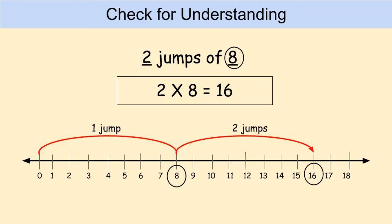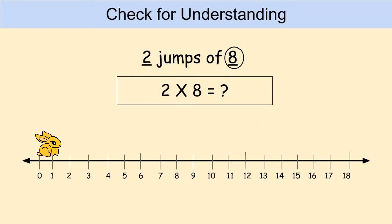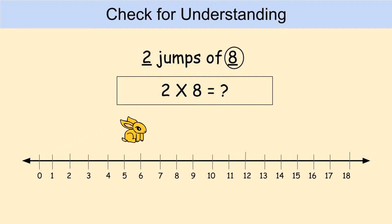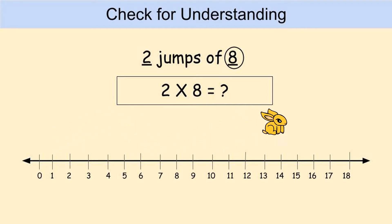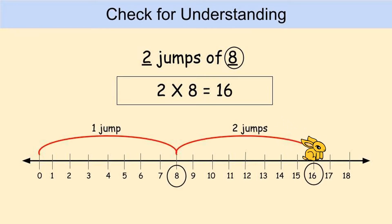Let's play back the video to see Cupcake's jump one more time. Cupcake started on zero and jumped to eight — eight is the number that's circled. Cupcake jumps one more time to sixteen because we have two jumps. Two jumps of eight means two times eight equals sixteen.